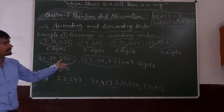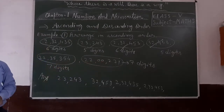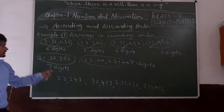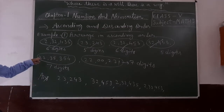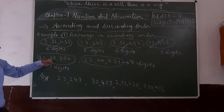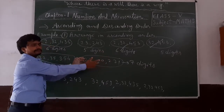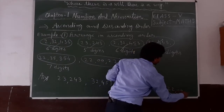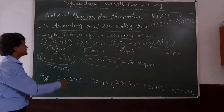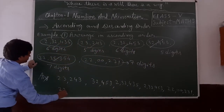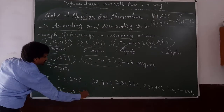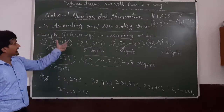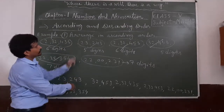Now we will talk about the numerals with 7 digits. There are 2 such numerals. Comparing from the leftmost digit: both start with 2, but the next digit is 3 in one and 0 in the other. That means the one with 0 is smaller. So we write 22,00,231 first, and the other one last. This completes the ascending order from smallest to largest.